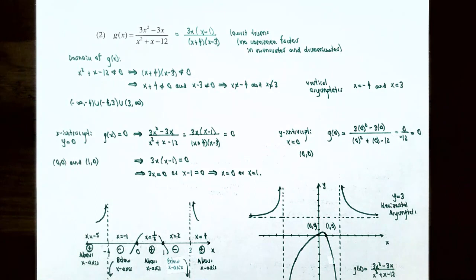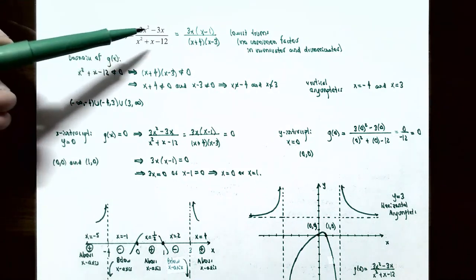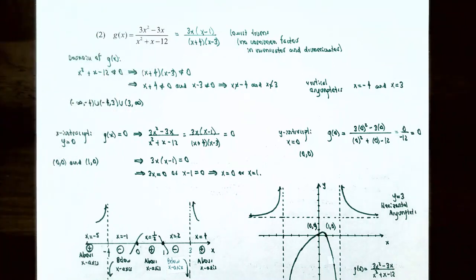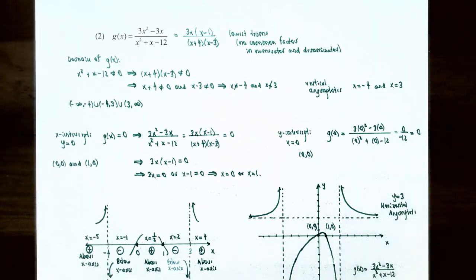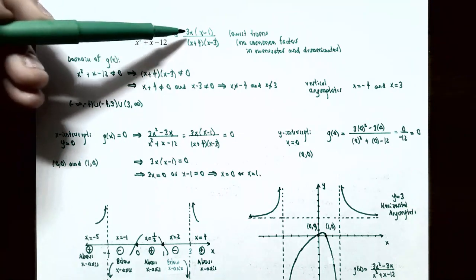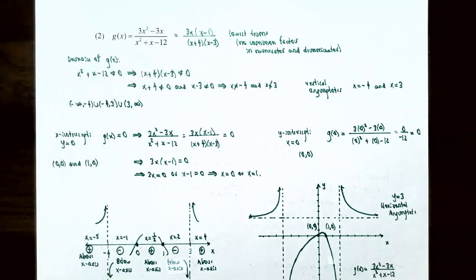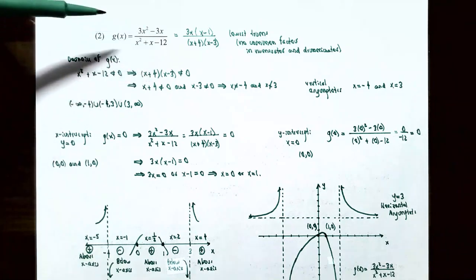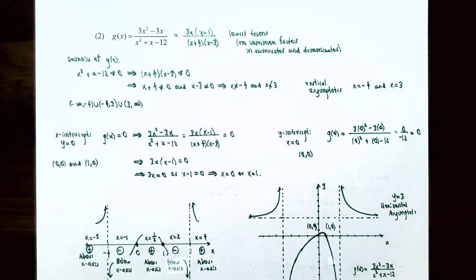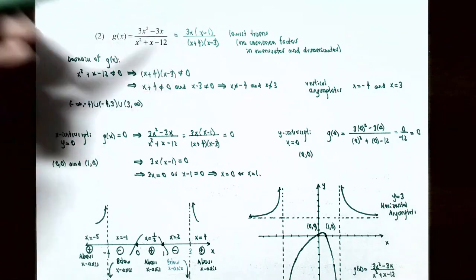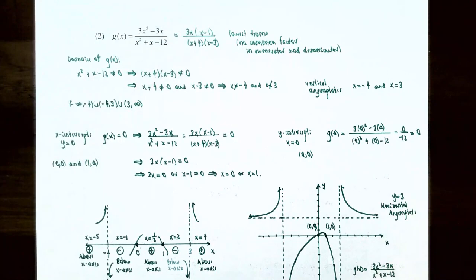Number two: graph g(x) = (3x² - 3x) / (x² + x - 12). Factor both numerator and denominator. The numerator has GCF of 3x: 3x(x - 1). The denominator is a trinomial — find two numbers multiplying to -12 and adding to +1: that's +4 and -3, giving (x + 4)(x - 3). There are no common factors between numerator and denominator, so this function is in lowest terms.